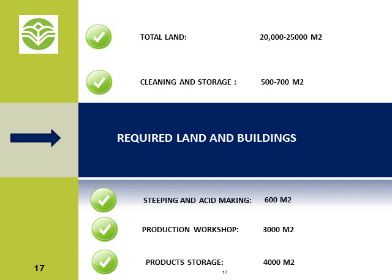Required land and buildings: total land is about 25,000 square meters. The production workshop is about 3,000 square meters. Storage required for products and by-products needs to be around 4,000 square meters.